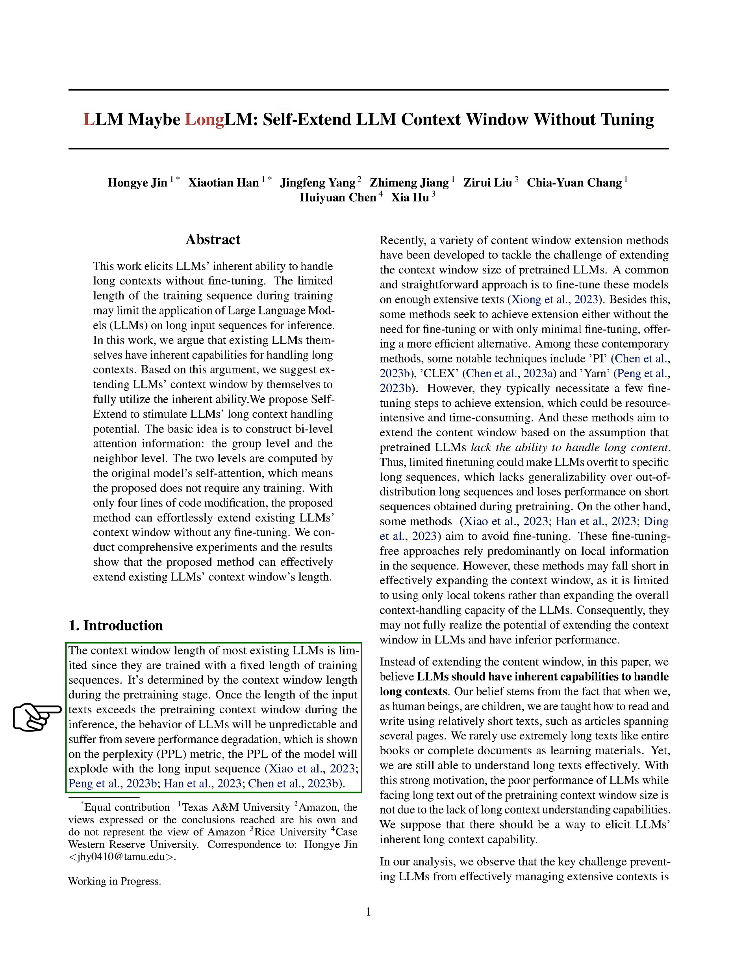We're going to discuss a common issue with large language models (LLMs), which is their limited context window length. This limitation is due to the fixed length of training sequences used during the pre-training stage. If the input text length exceeds this pre-training context window during inference, the LLM's performance can become unpredictable and degrade significantly. This degradation is evident in the perplexity metric, which tends to skyrocket with longer input sequences.